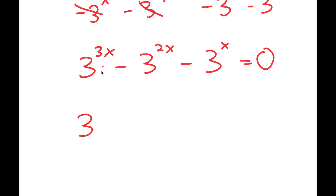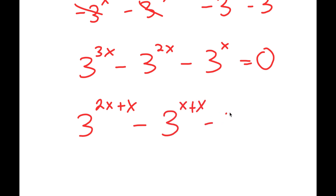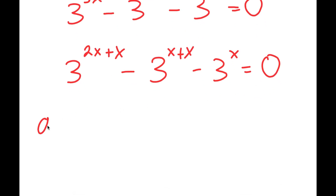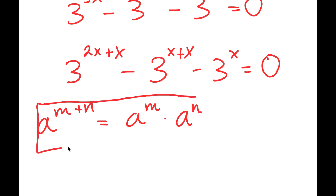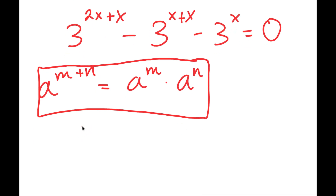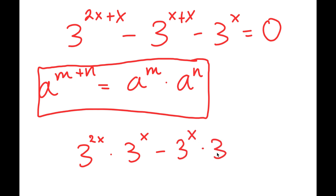Now I'm going to rewrite 3 to the power of 3x as 3 to the power of 2x plus x, and I'm going to rewrite 3 to the power of 2x as 3 to the power of x plus x, and I have 3 to the power of x at the end. If I have something in the form a to the power of m plus n, this is equal to a to the power of m times a to the power of n. So 3 to the power of 2x plus x equals 3 to the power of 2x times 3 to the power of x, and 3 to the power of x plus x equals 3 to the power of x times 3 to the power of x, minus 3 to the power of x equals 0.